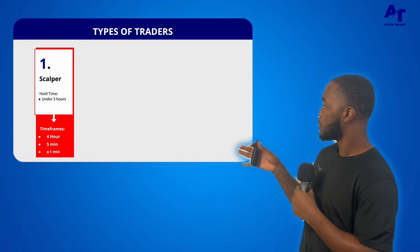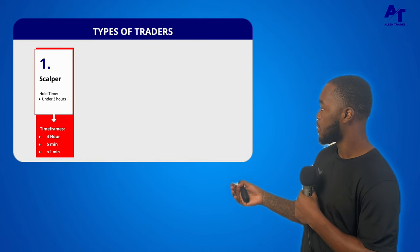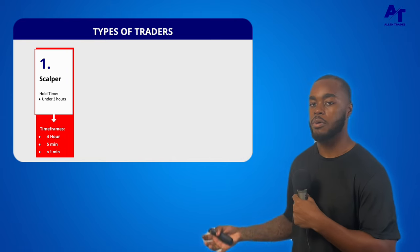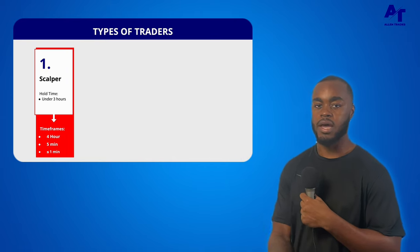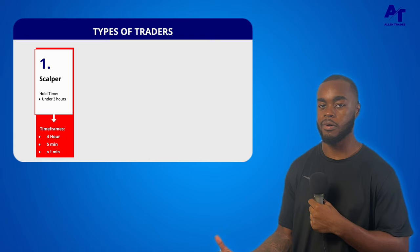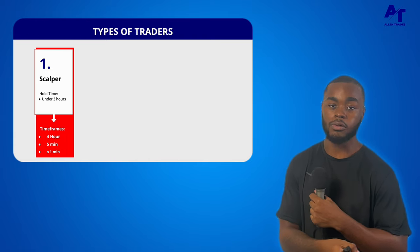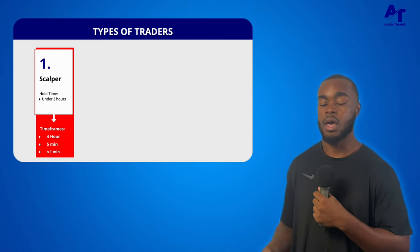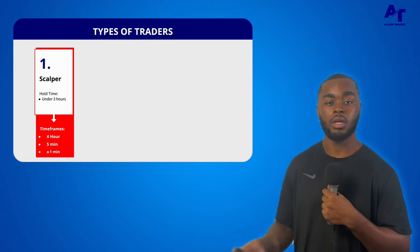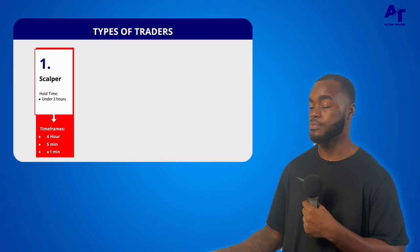The very first type of trader is a scalper. The general hold time for a scalper is around three hours. The timeframes that you use as a scalper are the four hour, the five minute, and the one minute — anything under that, including all the second charts. I personally don't like to go under a five second chart, but you can go as low as a one second chart.